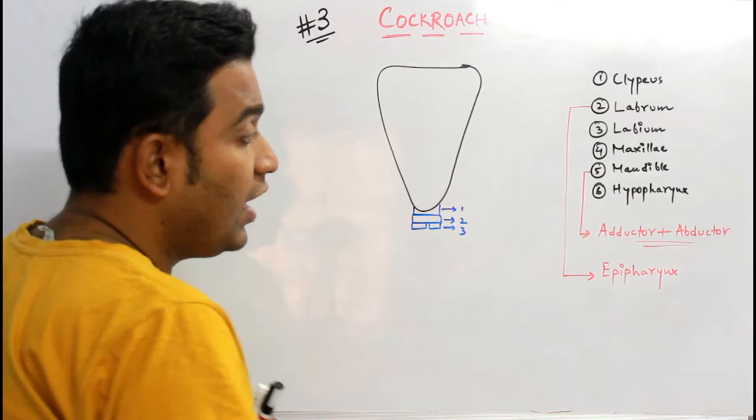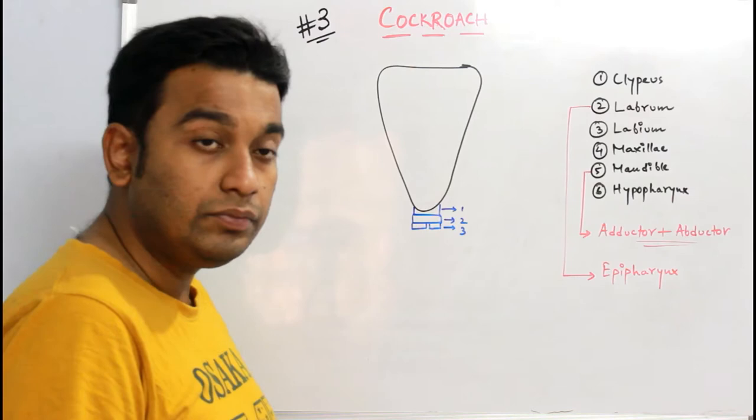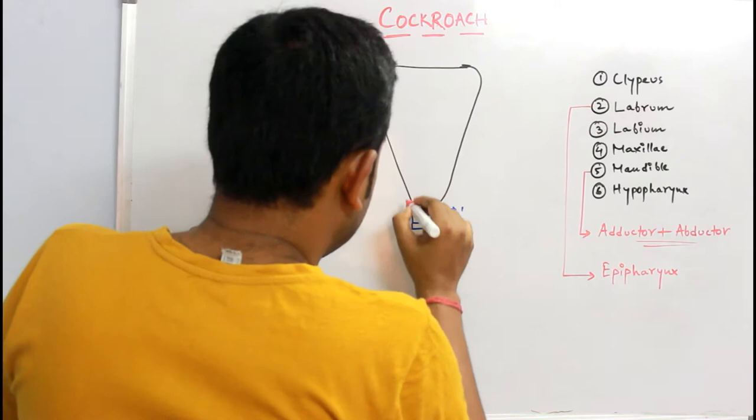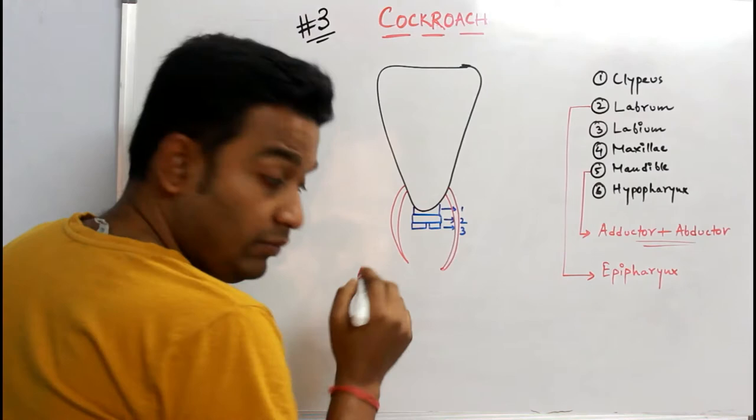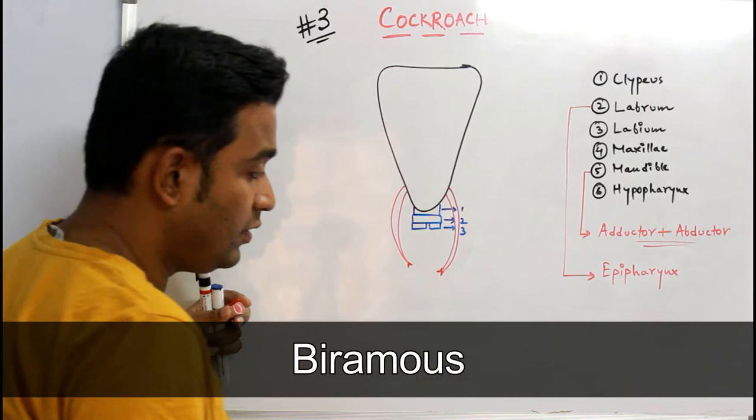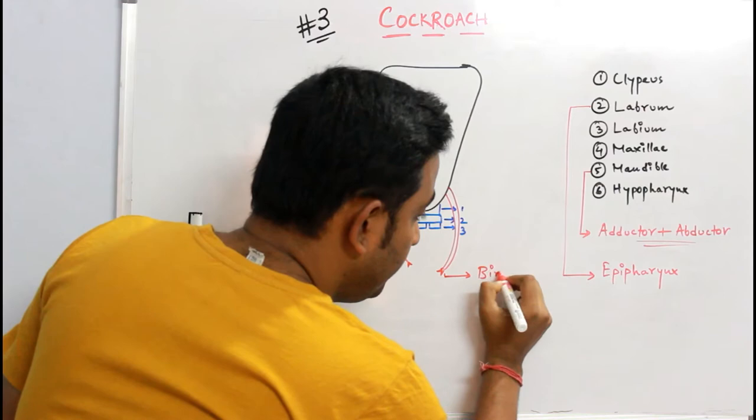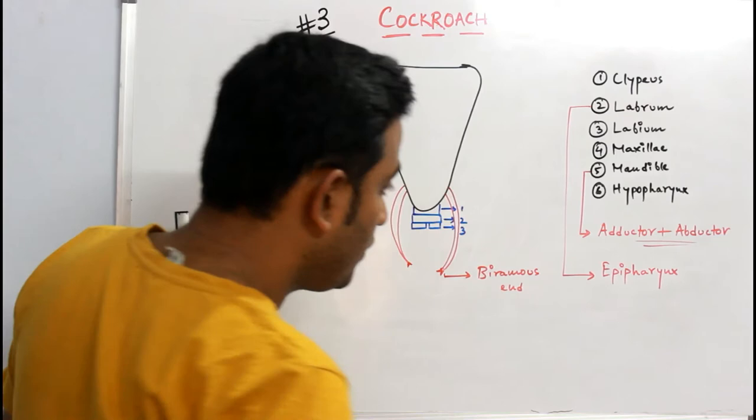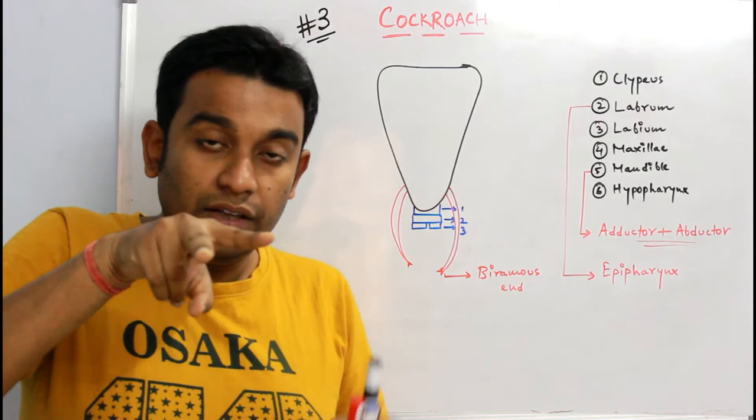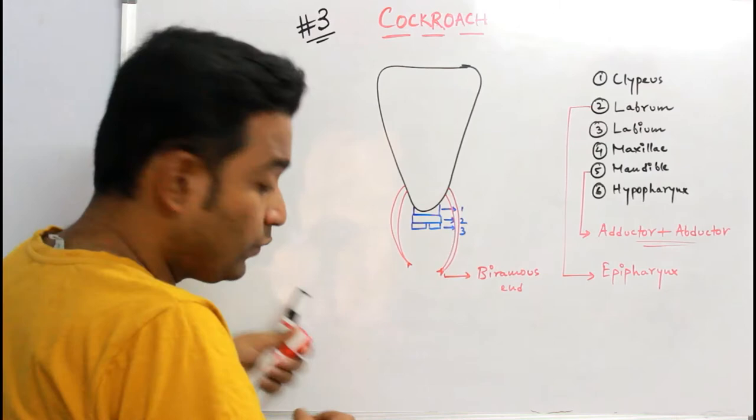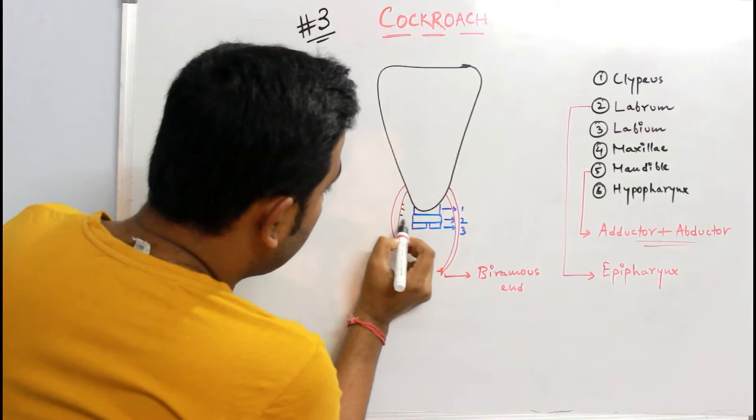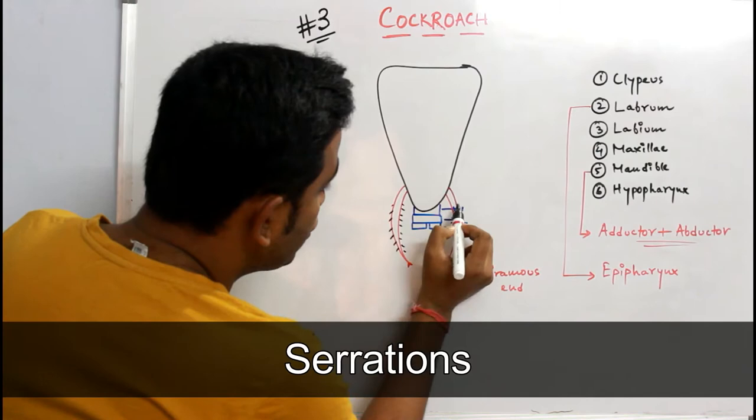Now let's understand the position and the structure of the jaw. First we'll talk about the maxilla, the upper jaw. See the location of the maxilla, it somewhat comes like this, and by the way they are bioremus in nature. So this is my bioremus end. With the help of bioremus end I can easily catch hold of any food particles and take it inside. Of course you will be having several projections known as the serrations.